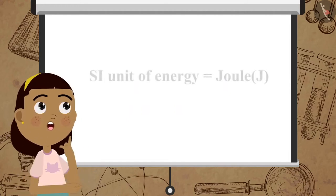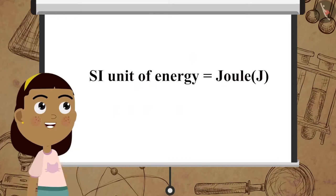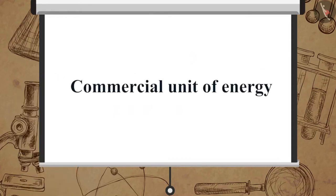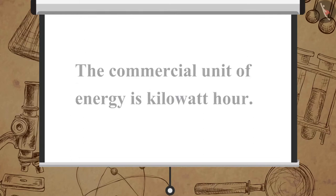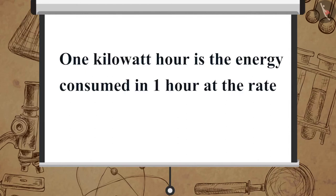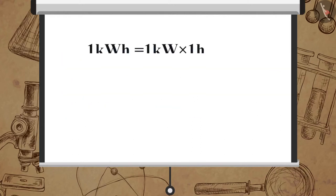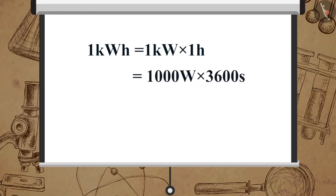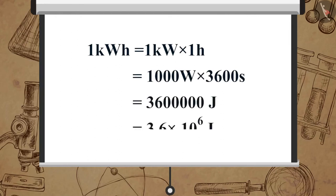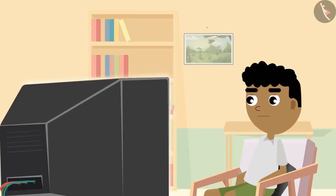Remember we studied about energy and its units. Now let us learn about the commercial unit of energy. As Joule is not enough to measure larger quantities of energy, the commercial unit of energy is Kilowatt hour. 1 Kilowatt hour is the energy consumed in 1 hour at the rate of 1000 Joule per second. 1 kWh = 1 kW × 1 hour = 1000 W × 3600 s = 3,600,000 J = 3.6 × 10⁶ J. This unit is also used in our households.